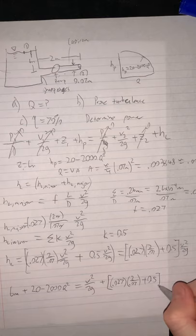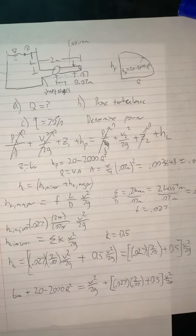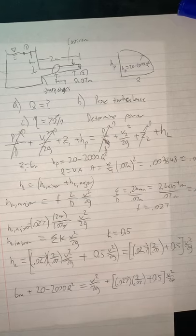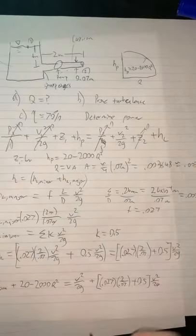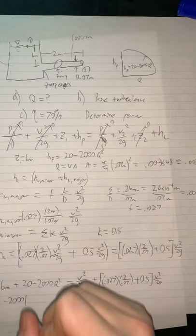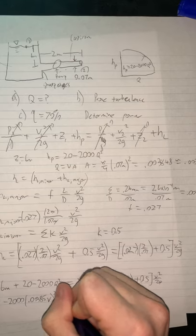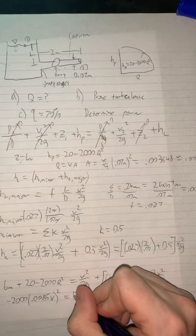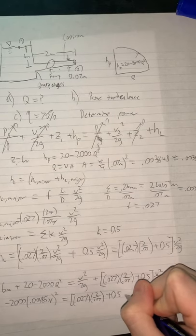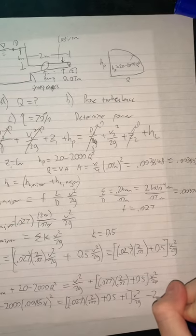We can simplify it again. We can combine these like terms. Q is the product of V and A. We know A so it'll just leave us with V. Simplifying one more time: negative 2000Q², which is the product of V and A, we know A is 0.00385 m² times V. We'll move those over equal to 0.027 times 2 over 0.07 plus 0.5 plus the 1 from this one times V²/2g, and then we have 26 from this side minus 26.